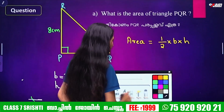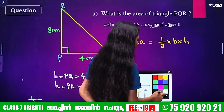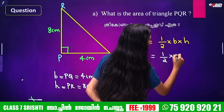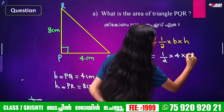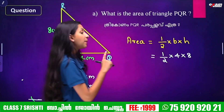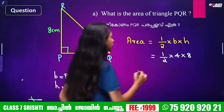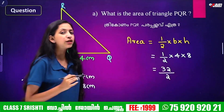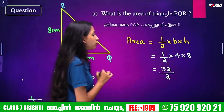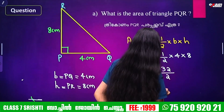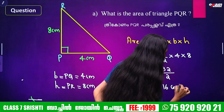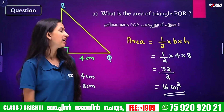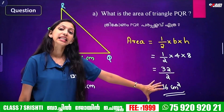What do we do with B and H? Half into B and H: B is 4, H is 8. So 4 into 8 is 32. 32 divided by 2 gives us 16. The area is 16 cm². The unit is very important — the answer is 16 cm².